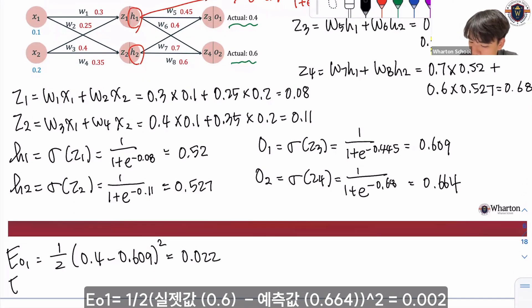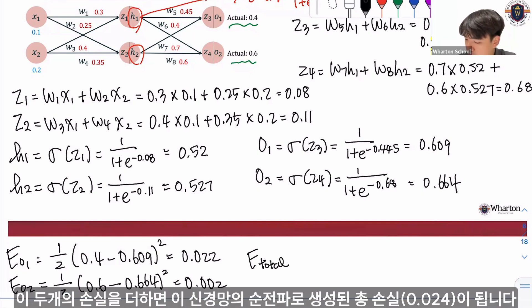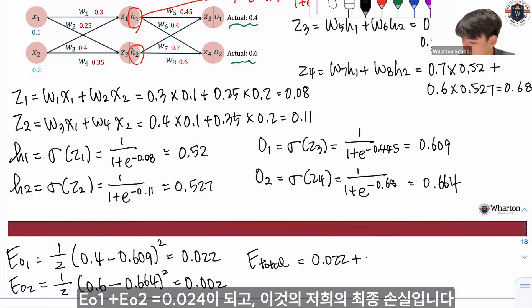And error of o2 is 1 over 2 of the actual value of 0.6 and the predicted value of 0.664 squared, which gives us 0.002. And we add, in order to get the total loss, which is the total loss generated by this forward propagation, we add these two errors, which is 0.022 plus 0.002, which is 0.024.